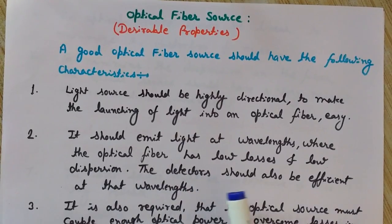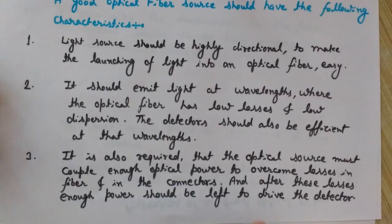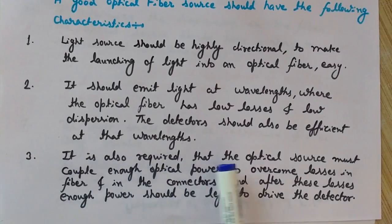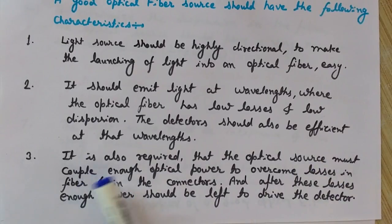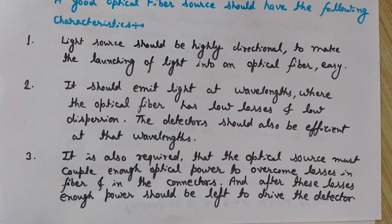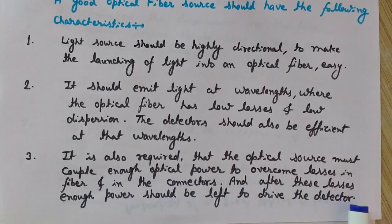Not only this, the detectors should also be efficient at those wavelengths — they should be able to detect these light rays efficiently. The third property: the optical source must couple enough optical power to overcome losses in the fiber and in the connectors, and after these losses, enough power should be left to drive the detector.